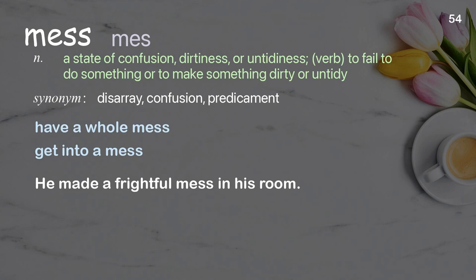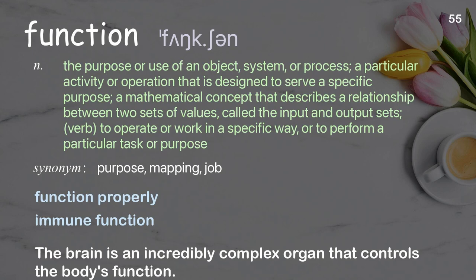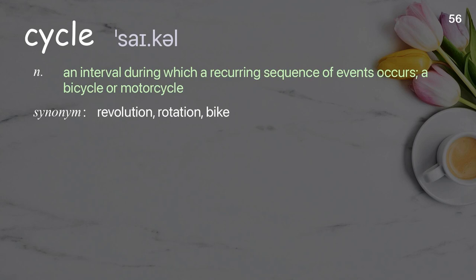Function: the purpose or use of an object, system, or process; a particular activity or operation designed to serve a specific purpose; also a mathematical concept describing a relationship between input and output sets. Verb: to operate or work in a specific way. Examples: function properly, immune function. The brain is an incredibly complex organ that controls the body's function.